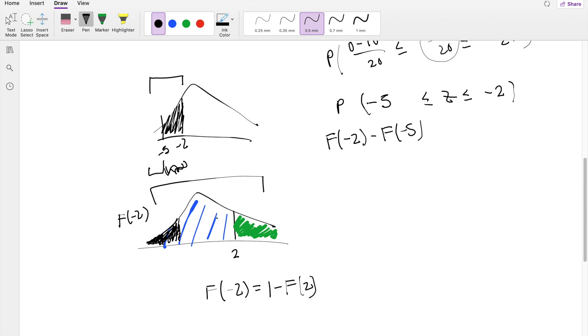You agree with this, right? F of negative 2, this CDF right here, is equal to the whole thing area minus the CDF of F to the 2, which we get the green area, which is the same probability as black.